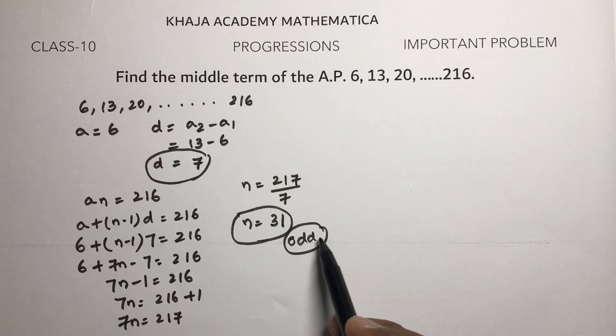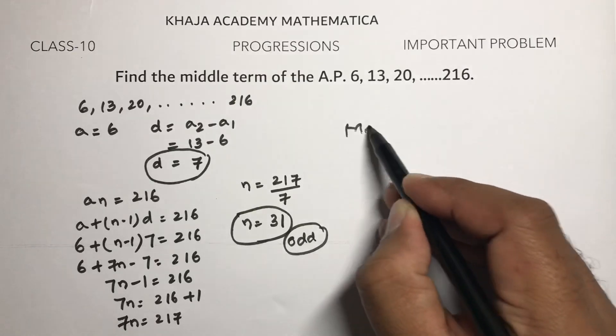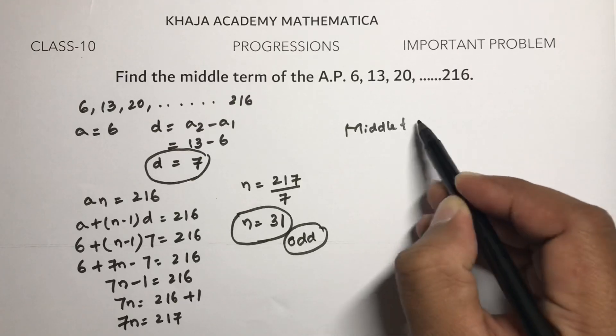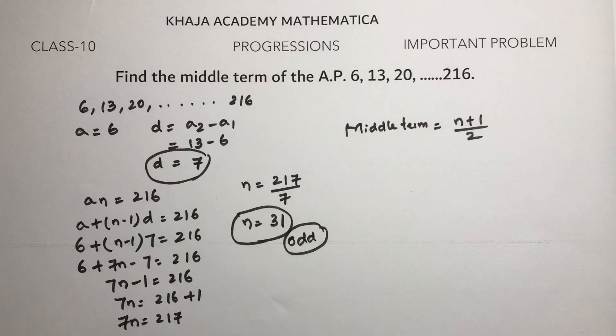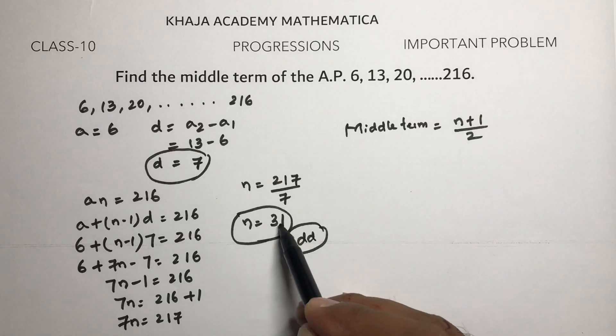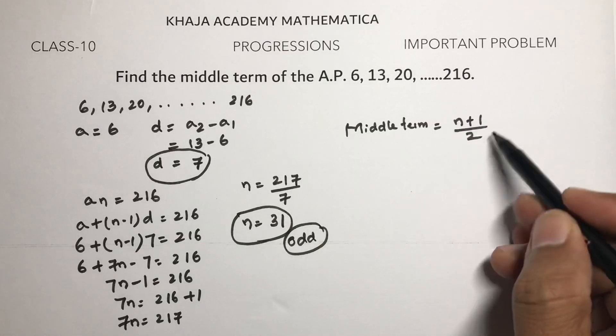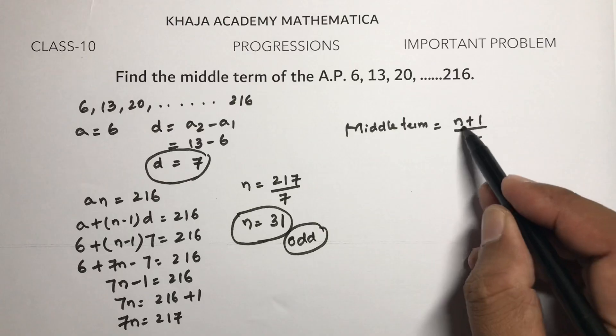If there are an odd number of terms, to find the middle term, like in statistics, the formula is (n+1)/2. When the number of terms is odd, we get only one middle term.